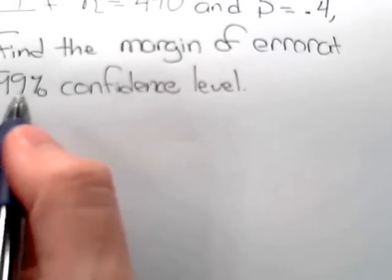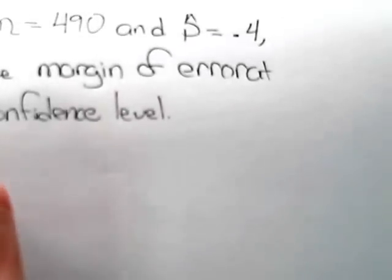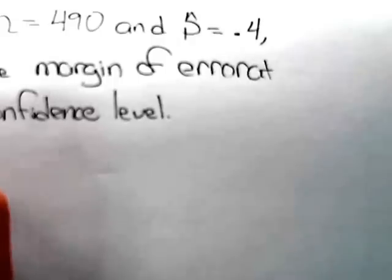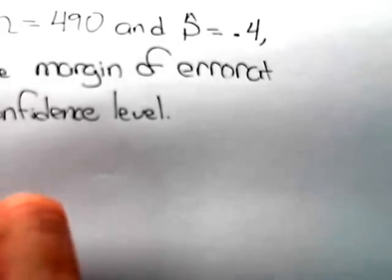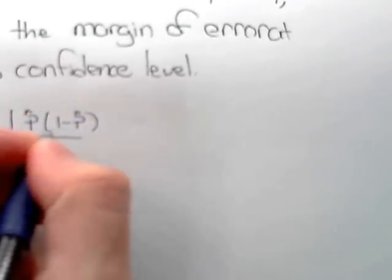We see that the formula for the margin of error of a one sample proportion is z star times the square root of p hat times one minus p hat over n.